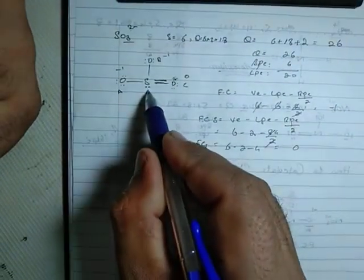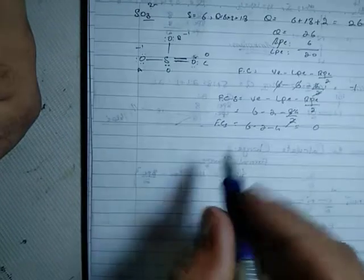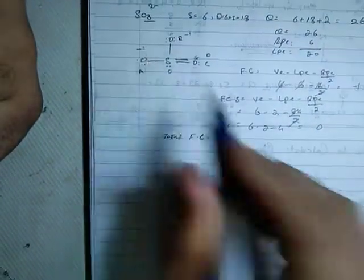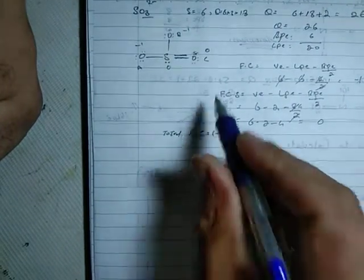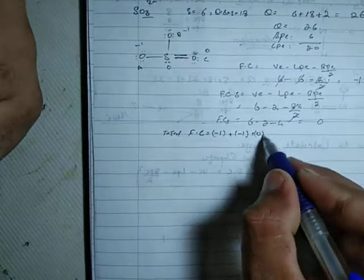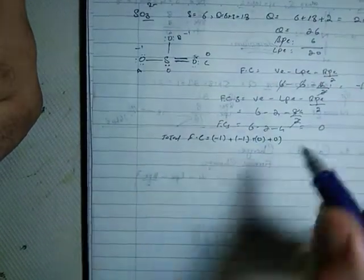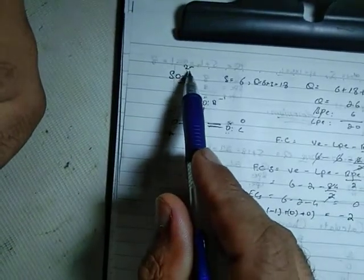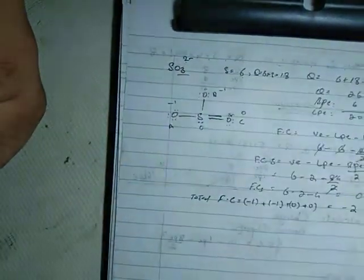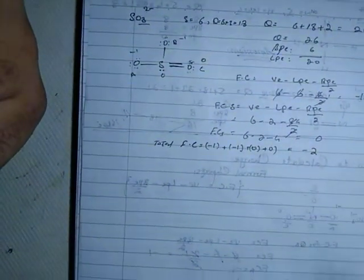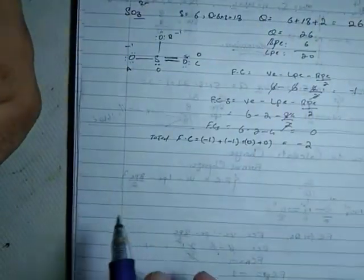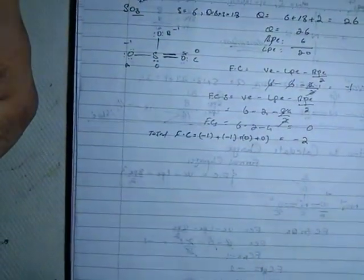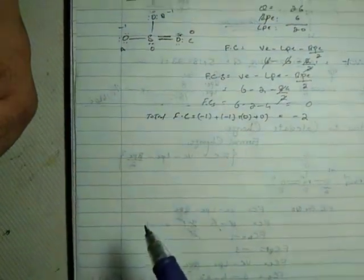The total formal charge is minus 1 plus minus 1 plus 0 equals minus 2. But with charges on the atoms, this structure is less stable. We need to make it more stable by forming a double bond.